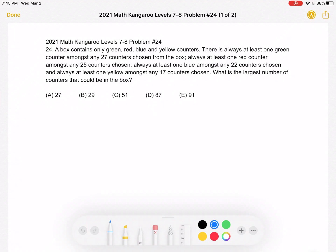This is the 2021 Math Kangaroo Level 7-8 Problem Number 24. A box contains only green, red, blue, and yellow counters.